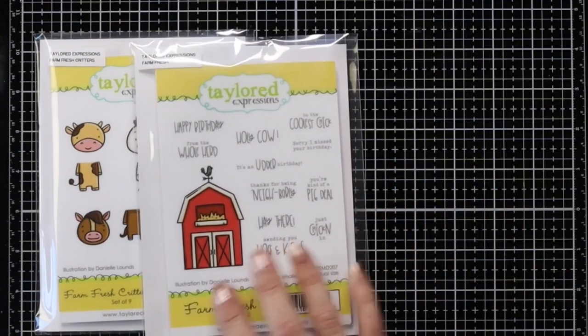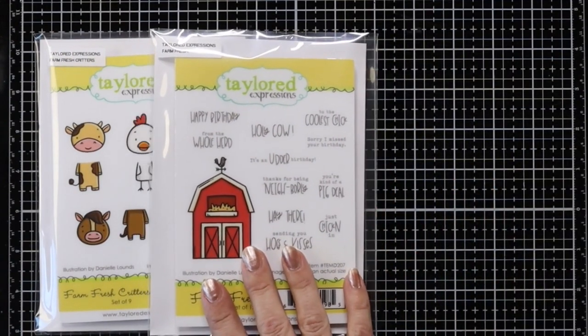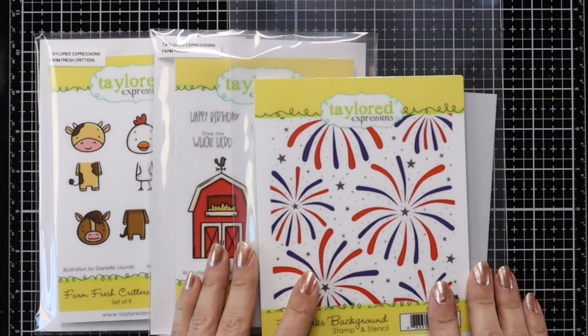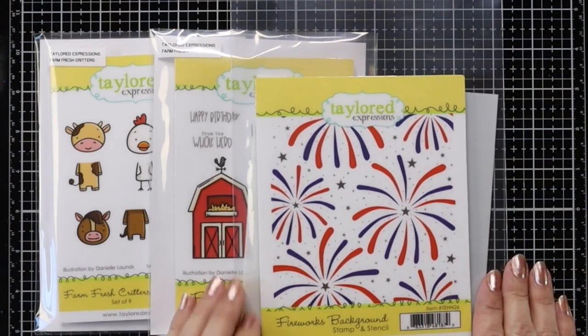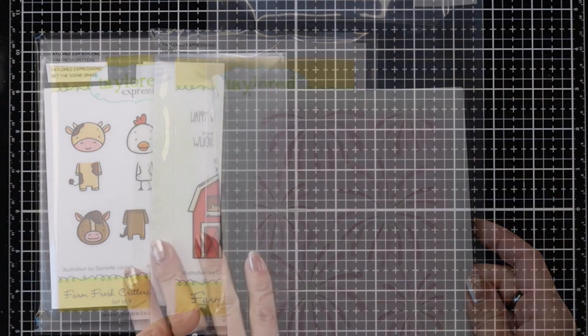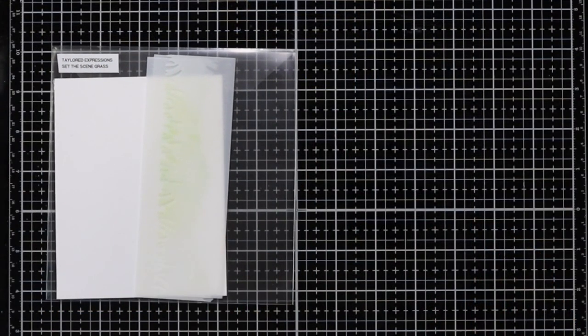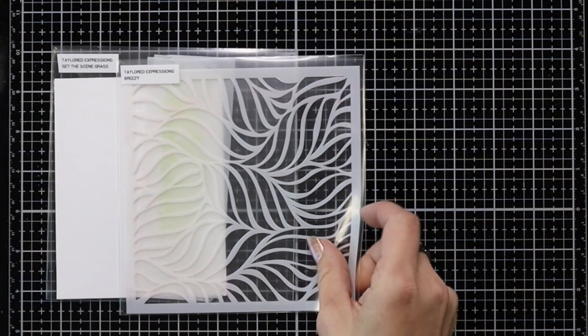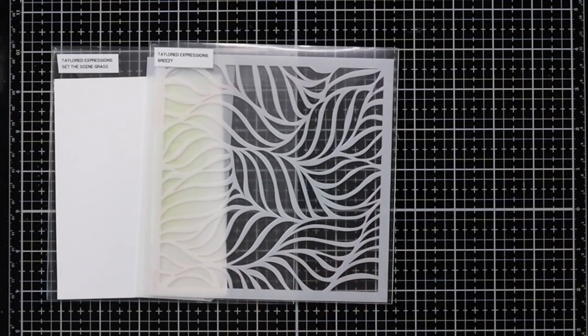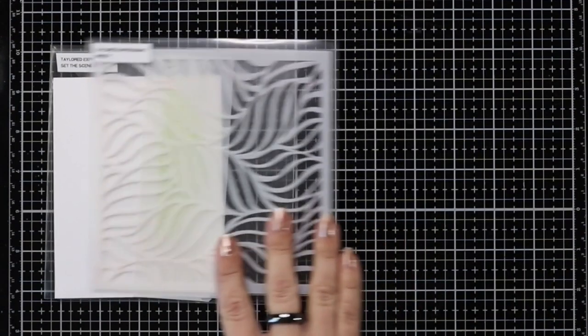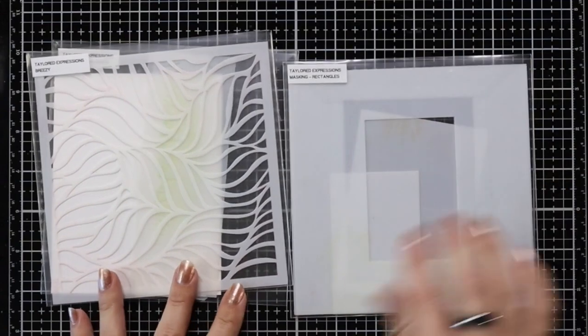Some of the products that I'll be using today are the FarmFresh Critters, FarmFresh and the Fireworks Background and this is a stamp and a stencil set. I'll also be using the stencils Set the Scene Grass, Breezy and the Masking Rectangle Stencil.